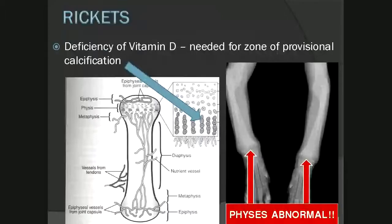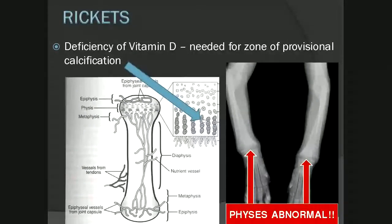Rickets is caused by an inadequate plasma level of vitamin D along with a diet deficient in calcium and phosphorus — these often go together. Vitamin D is needed for the zone of provisional calcification. If the chondrocytes lining up in the physis cannot mineralize due to absent vitamin D, this results in generalized defective bone formation and decreased bone mineralization, causing poor growth, weakness, decreased activity, and bone distortion.